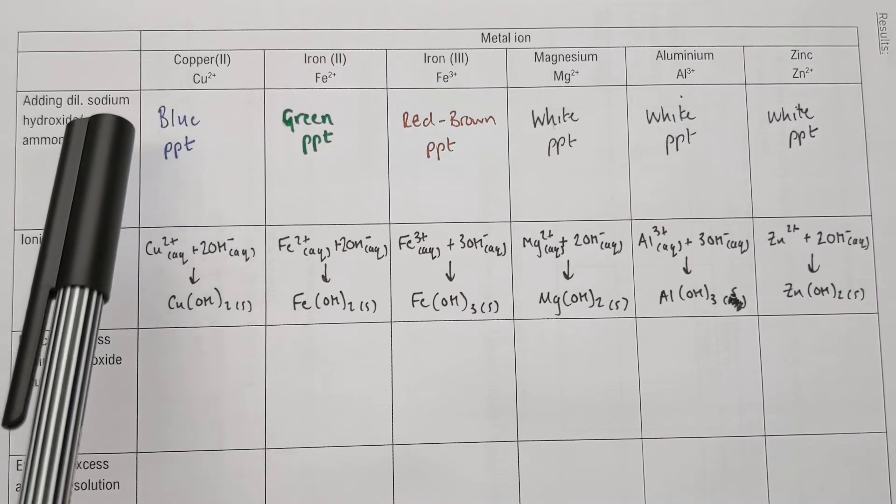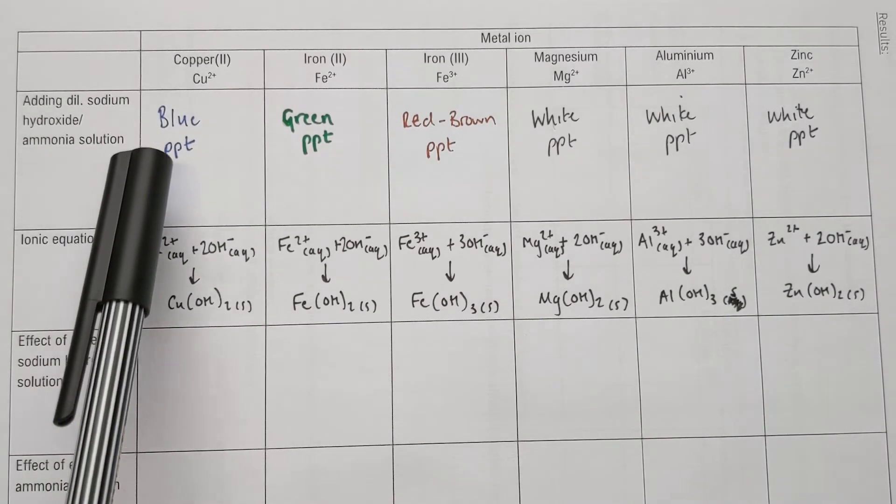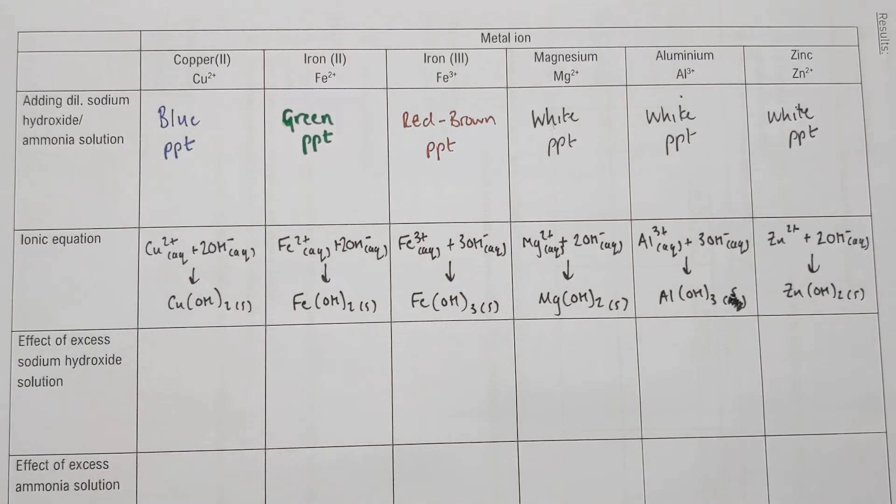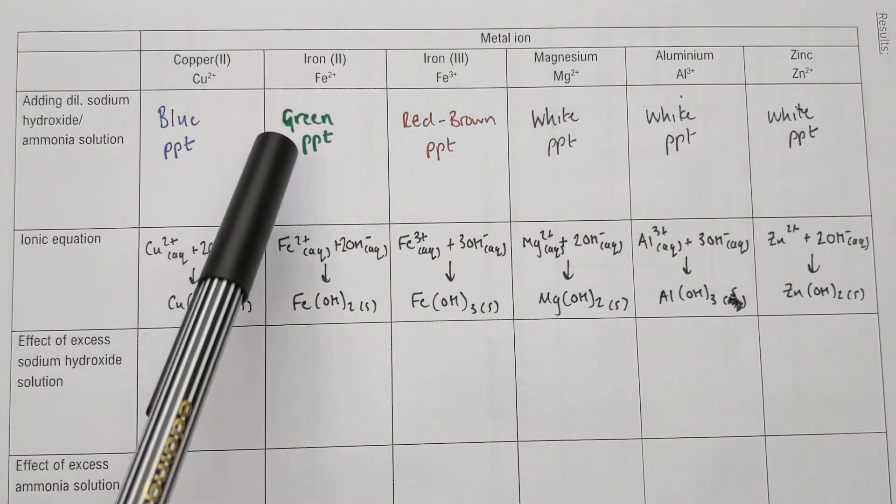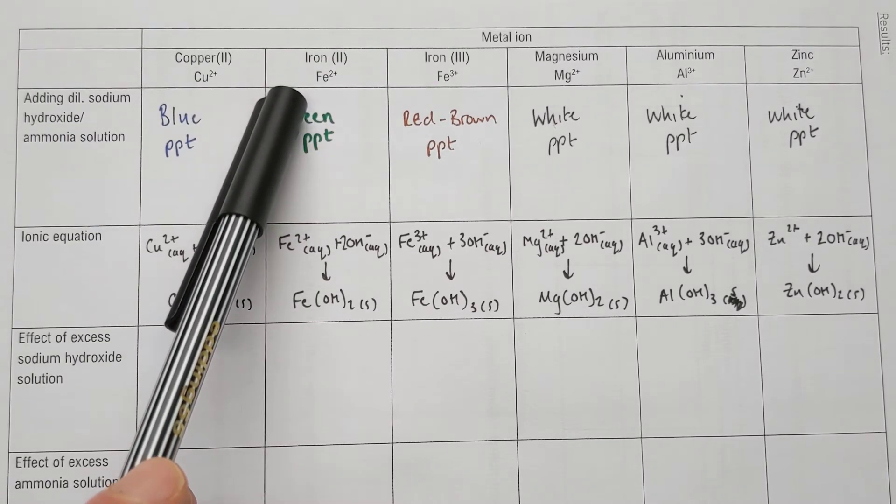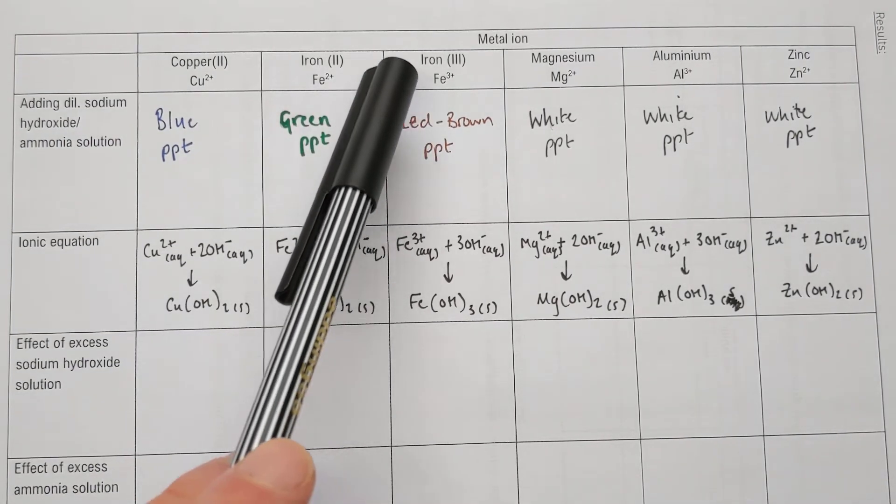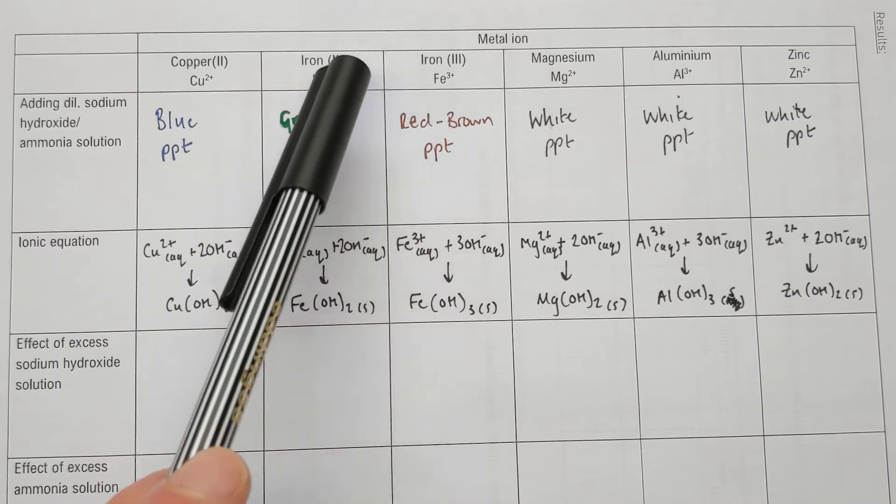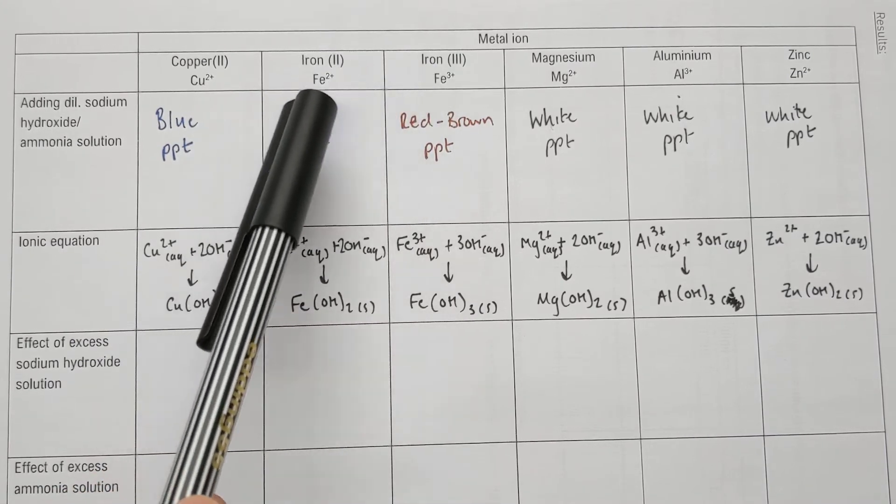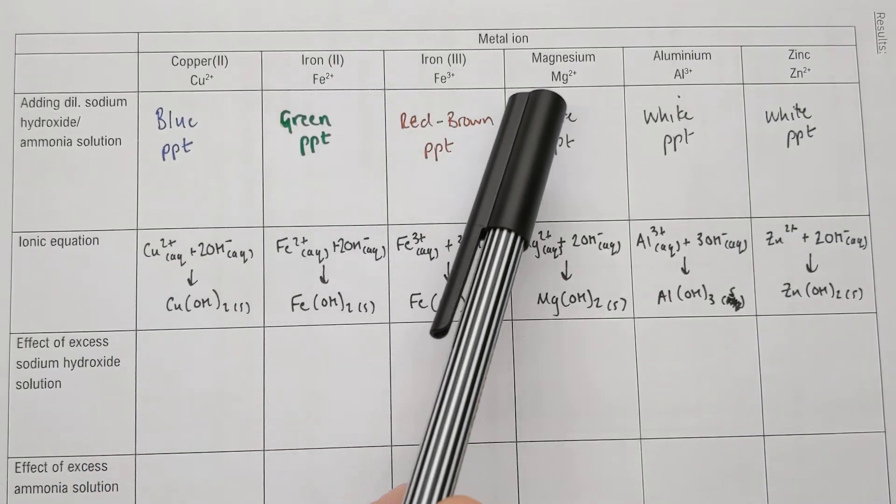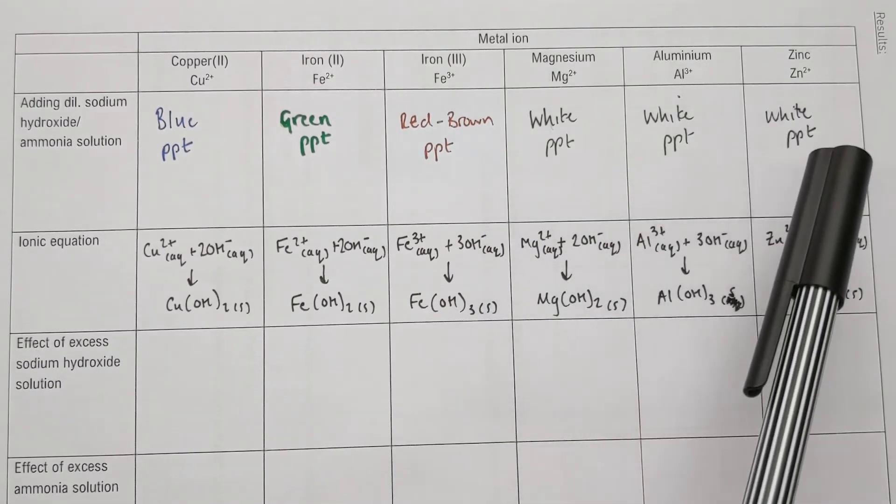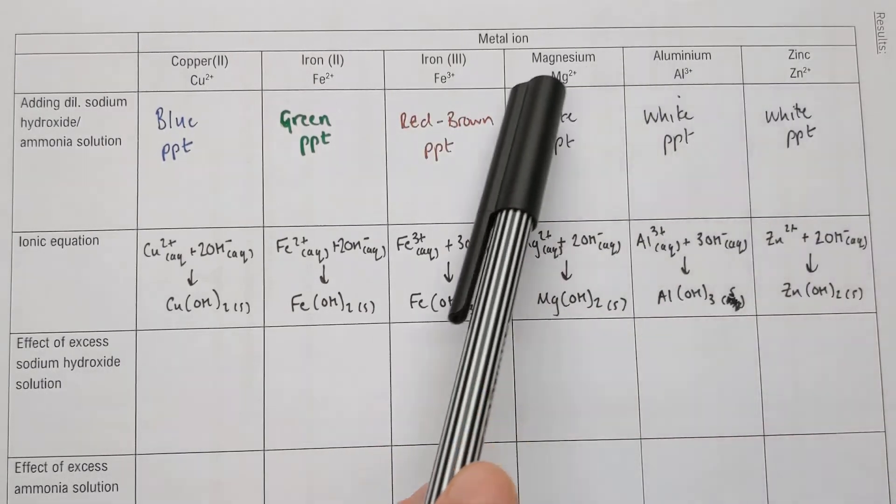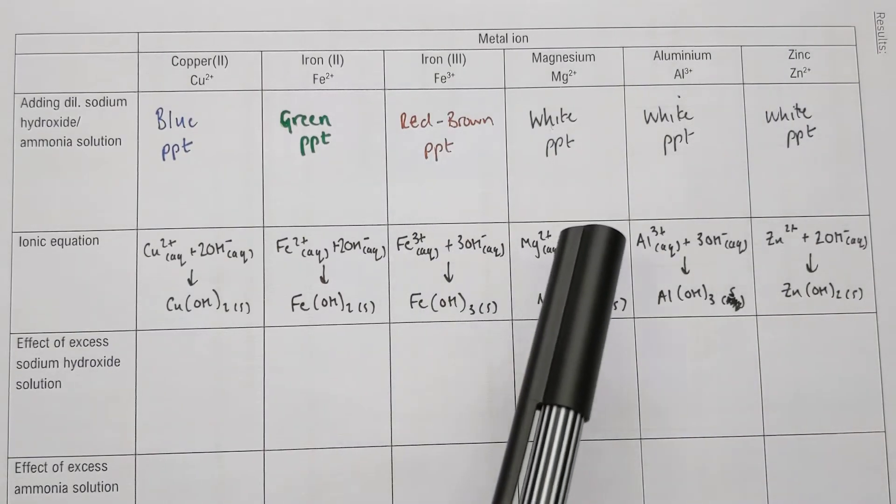We've got six different ions we're going to test with this precipitate method. Here are the colors. Unfortunately, you have to know these off by heart for each different ion. Copper gives a blue precipitate. A common abbreviation of the word precipitate in chemistry is PPT, though in the exam it's probably best to put precipitate the full word. Blue precipitate for copper 2+. A green precipitate for iron 2+. A red-brown precipitate for iron 3+. There's two different types of iron ion with different colors. Magnesium, aluminum and zinc ions give you a white precipitate in each case.